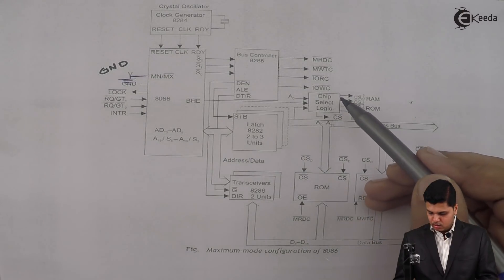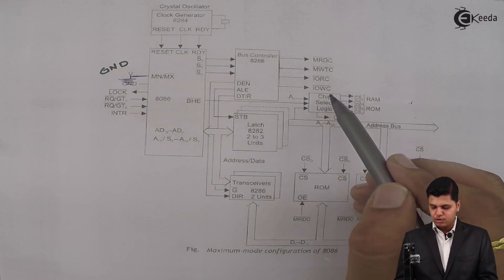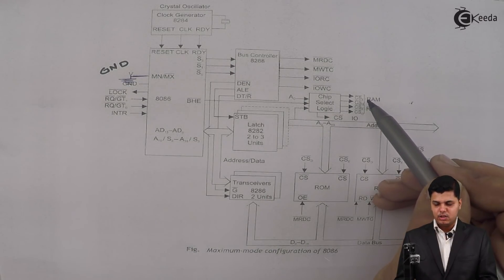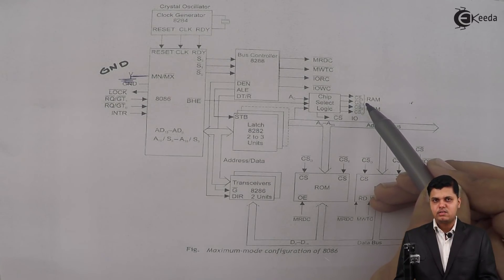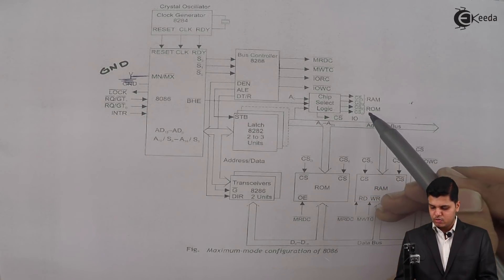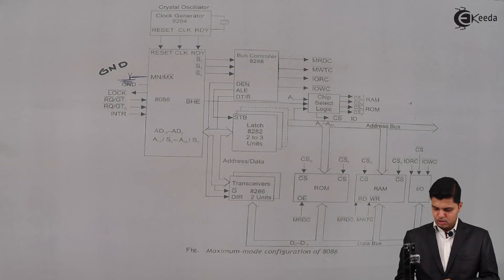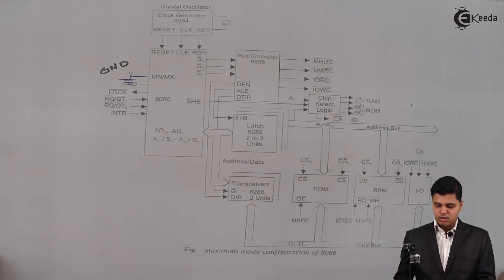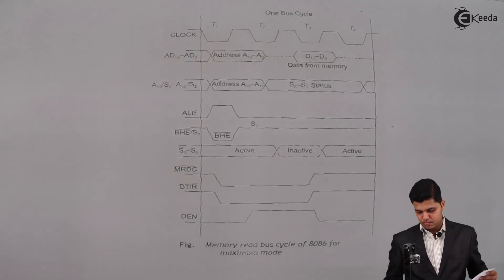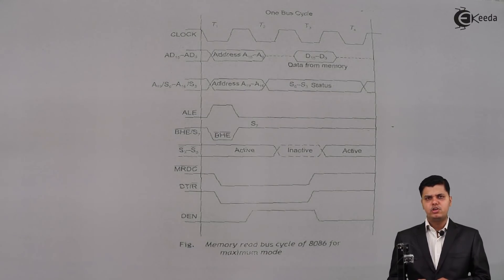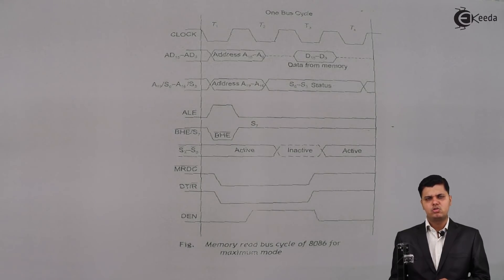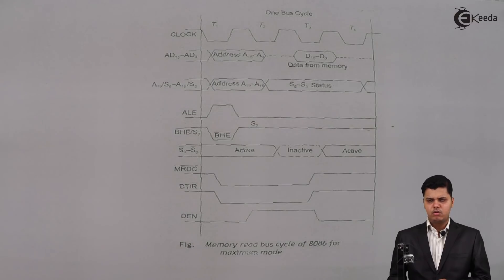One more thing: the signals A0 and BHE bar are used for selecting the address of CSO (chip select for odd address bank) and CSE (chip select for even address bank) for RAM, and the same two signals for ROM also. Next, we are going to see the memory read bus cycle for the 8086 microprocessor in maximum mode and what happens to signals in T1, T2, T3, and T4 states.